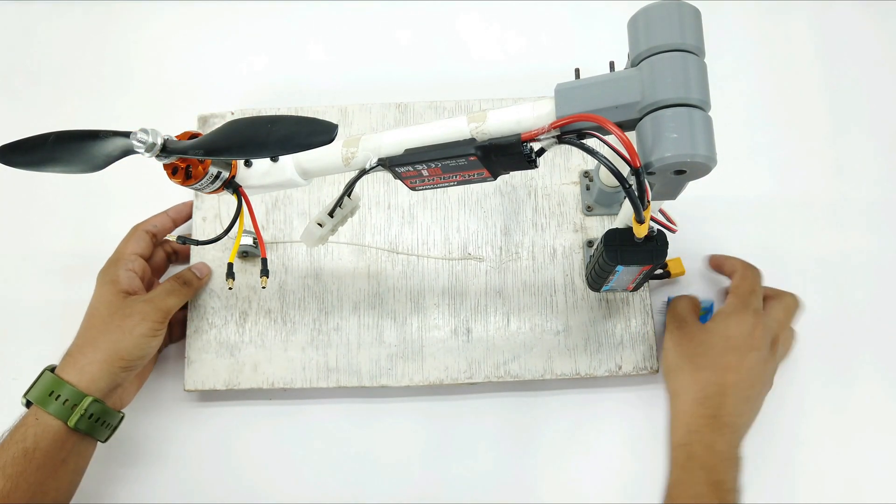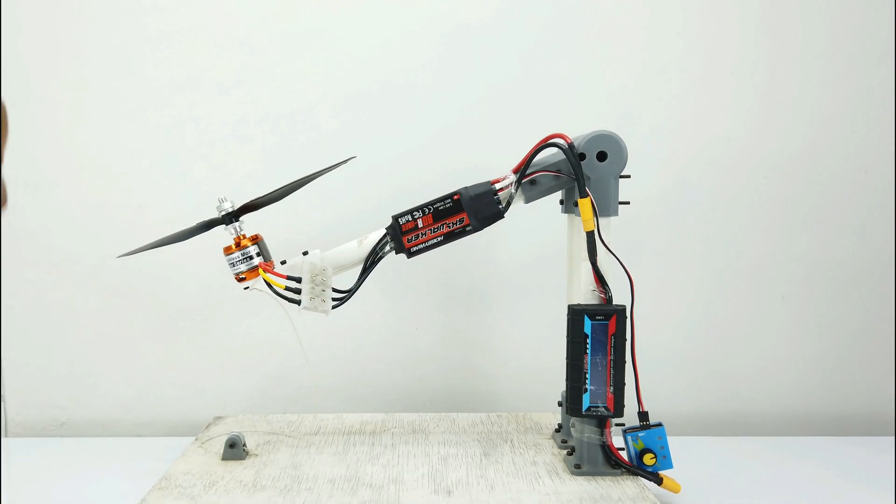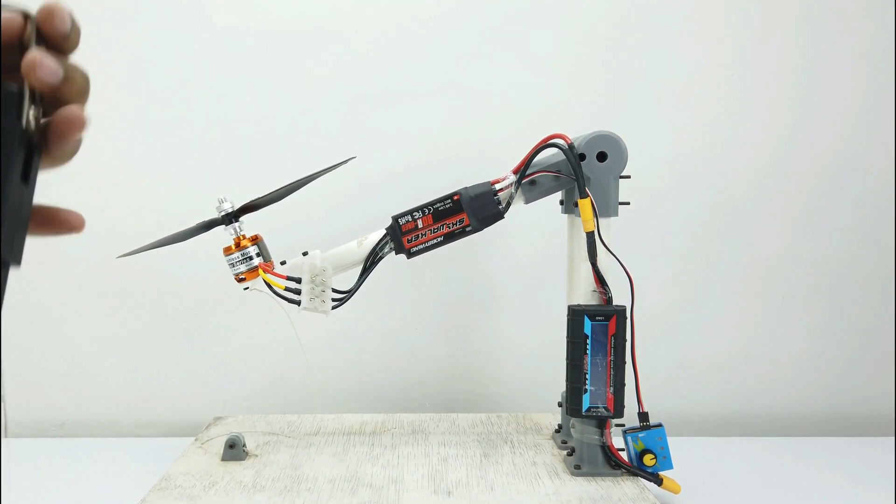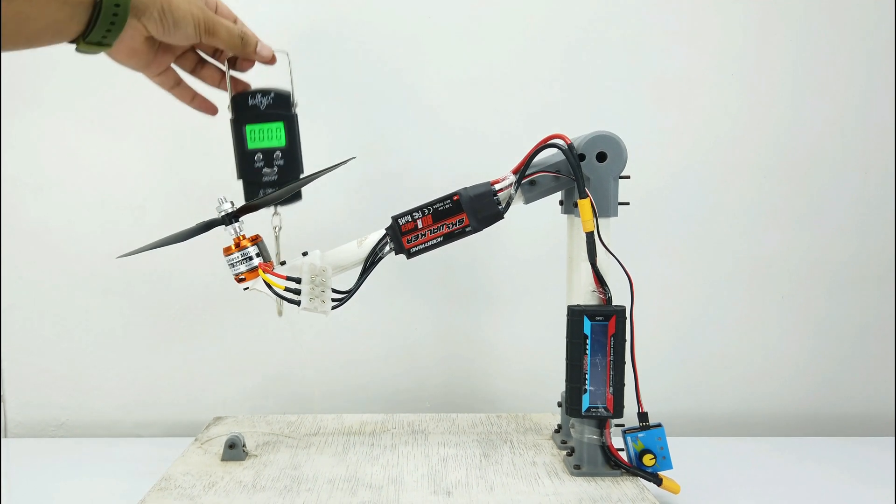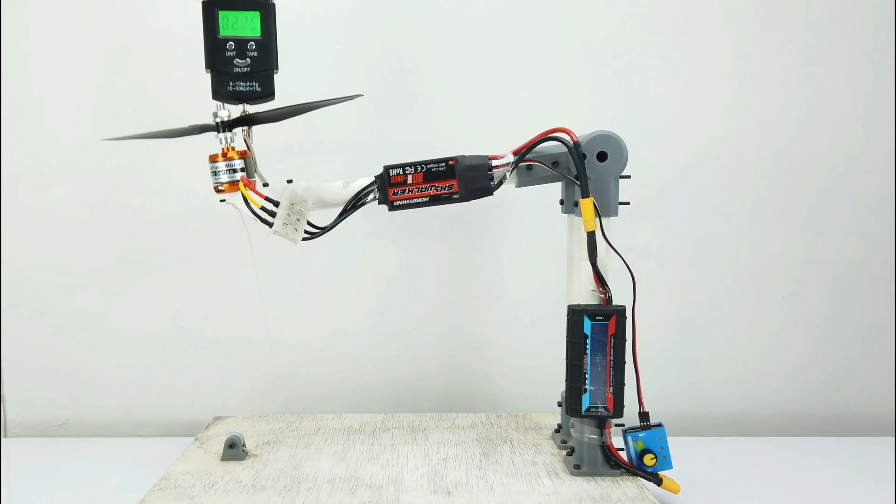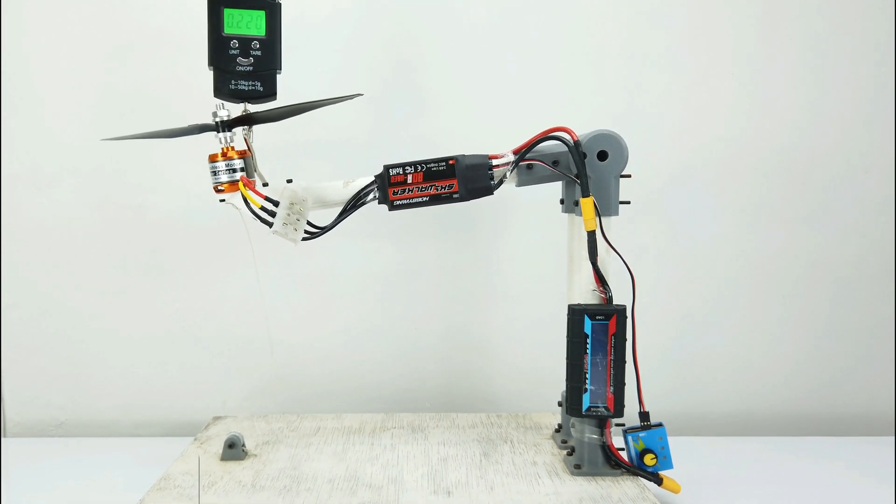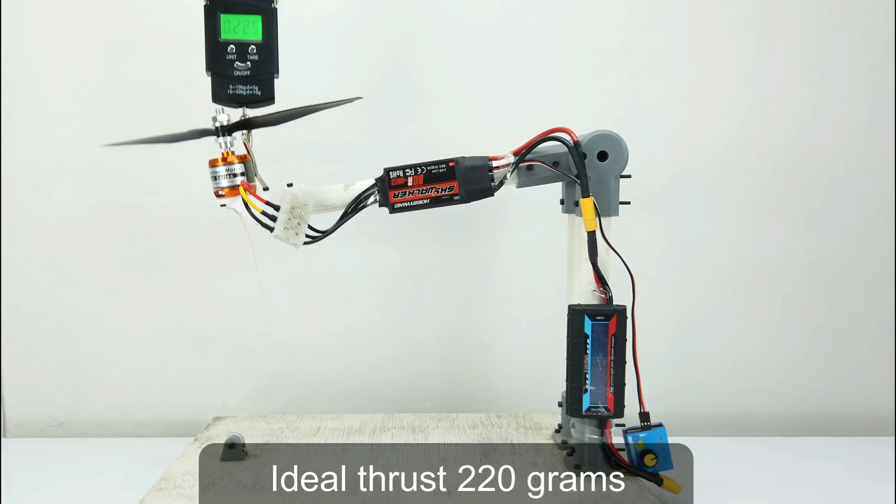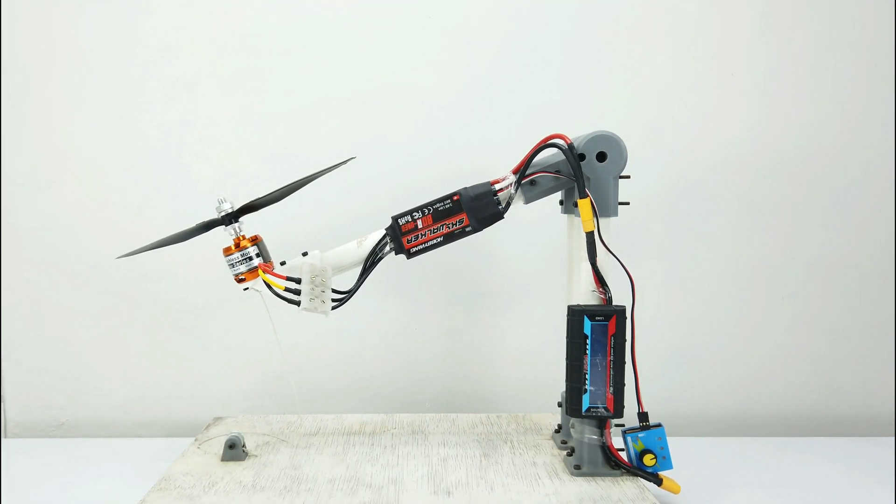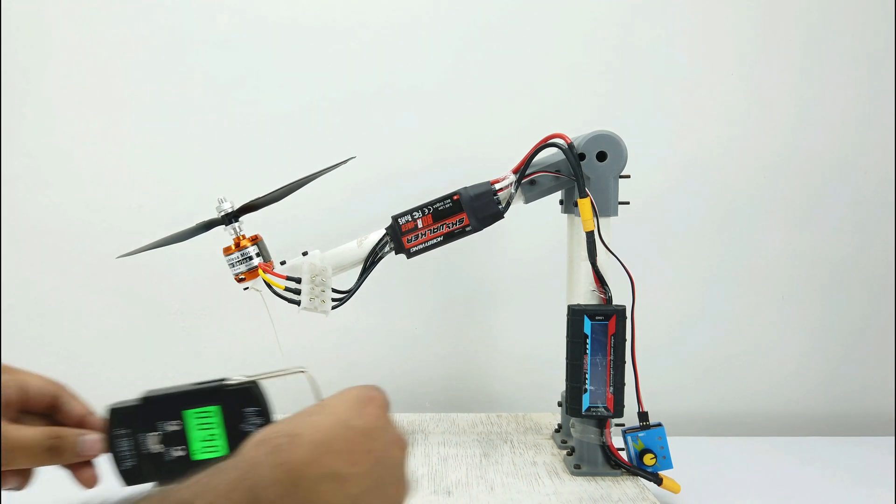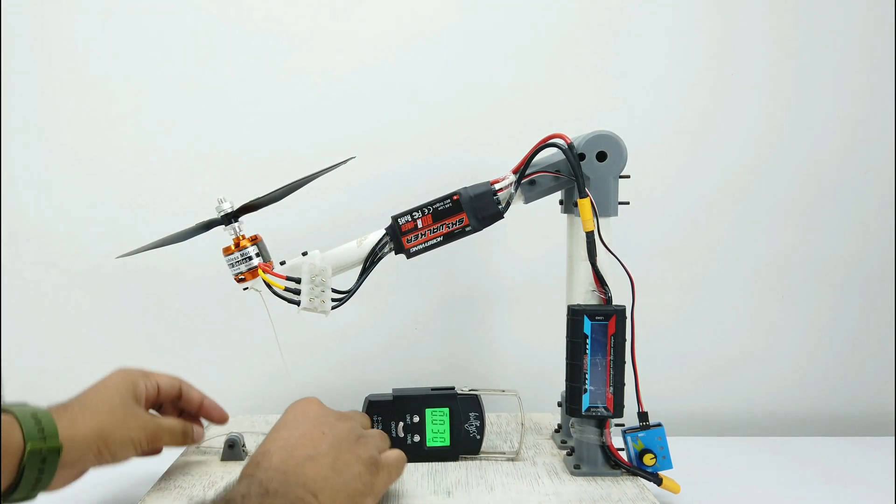I will start the thrust test now. First of all I will check its ideal thrust using this spring balance. Ideal thrust is the amount of thrust it takes for the motor to lift this arm horizontally. So it's approximately 220 grams. And I will note it down. Now I will fix this spring balance here. The spring balance will calculate the thrust.